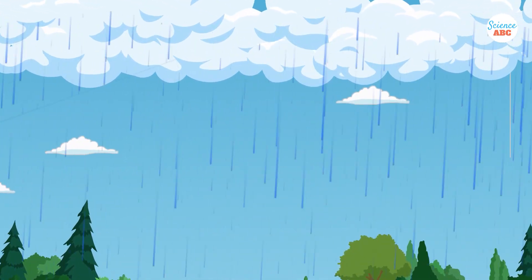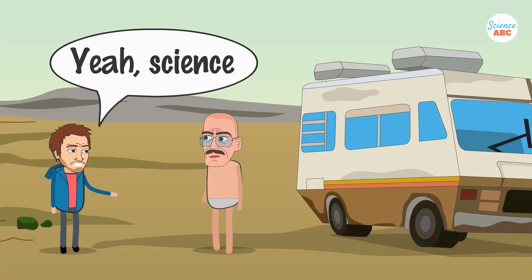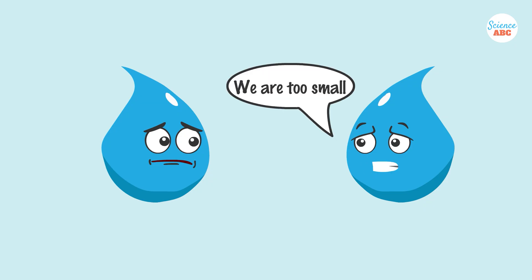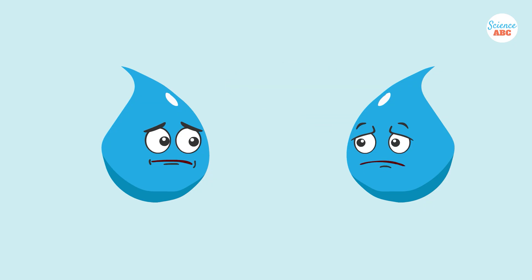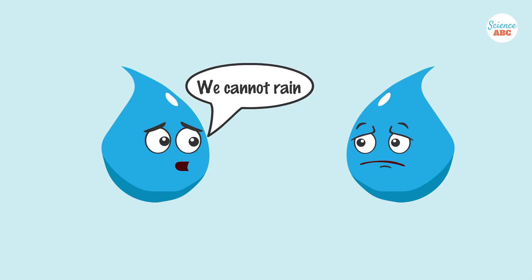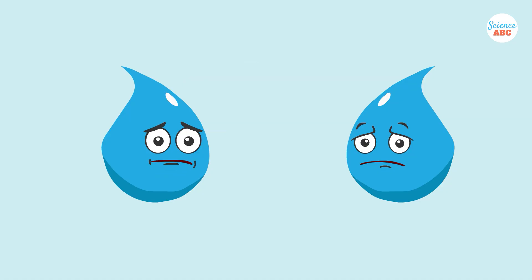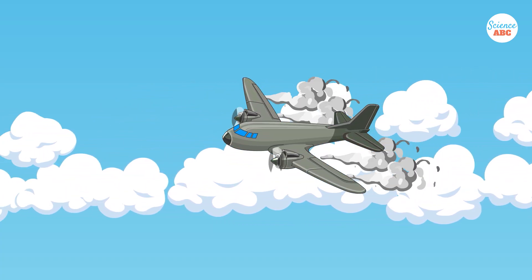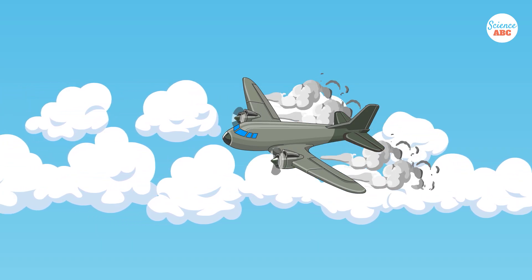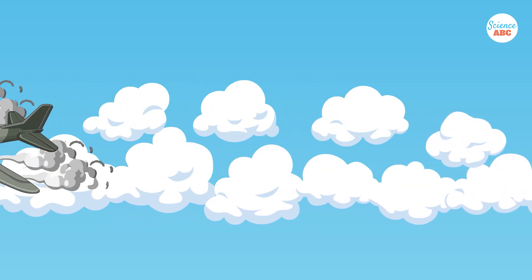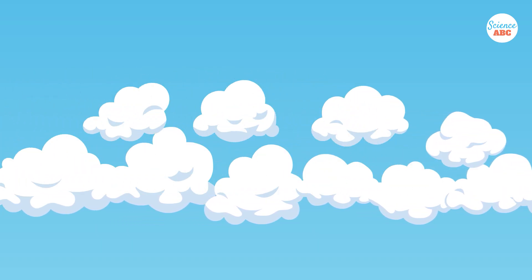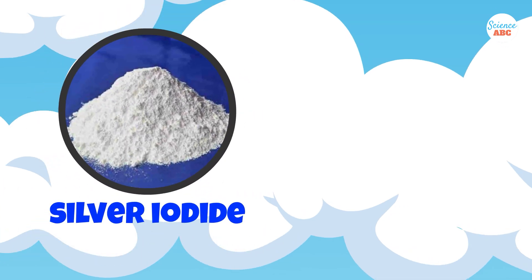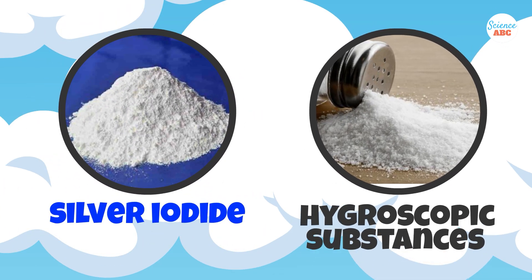Now, how does cloud seeding fit into this process? In certain clouds, the conditions may be such that the water droplets are too small to fall as precipitation. In other words, the process of droplet formation and accumulation isn't functioning effectively enough to produce rain. To change the conditions within these clouds, cloud seeding is employed, which consists of aircraft or ground-based generators releasing specific particles into the clouds. The most commonly used materials are silver iodide and hygroscopic substances like table salt, as these can attract moisture.